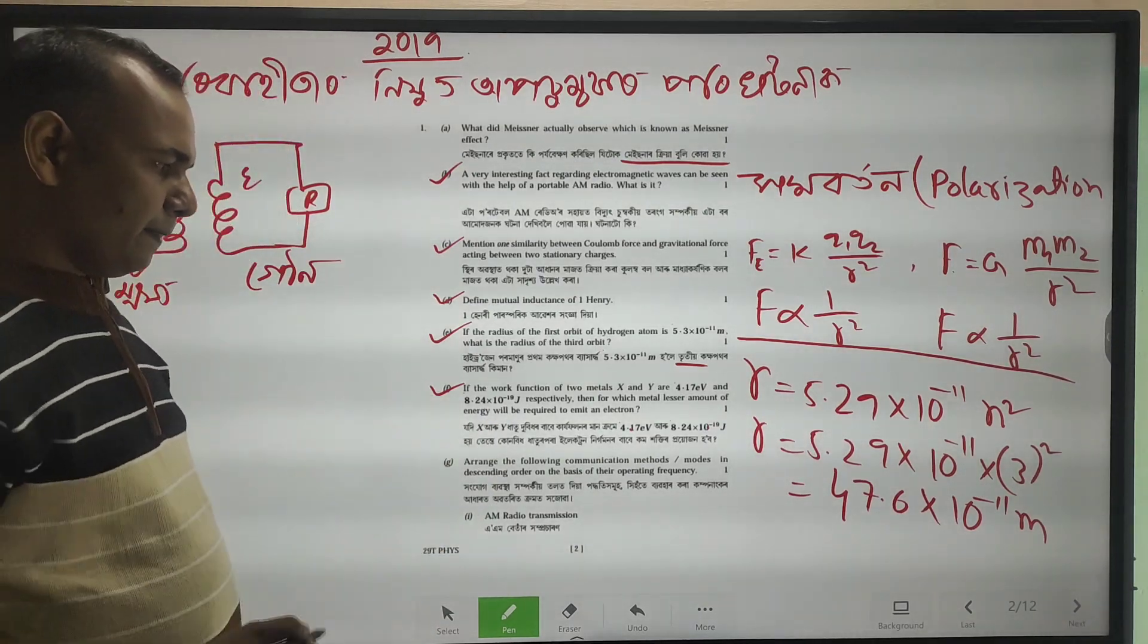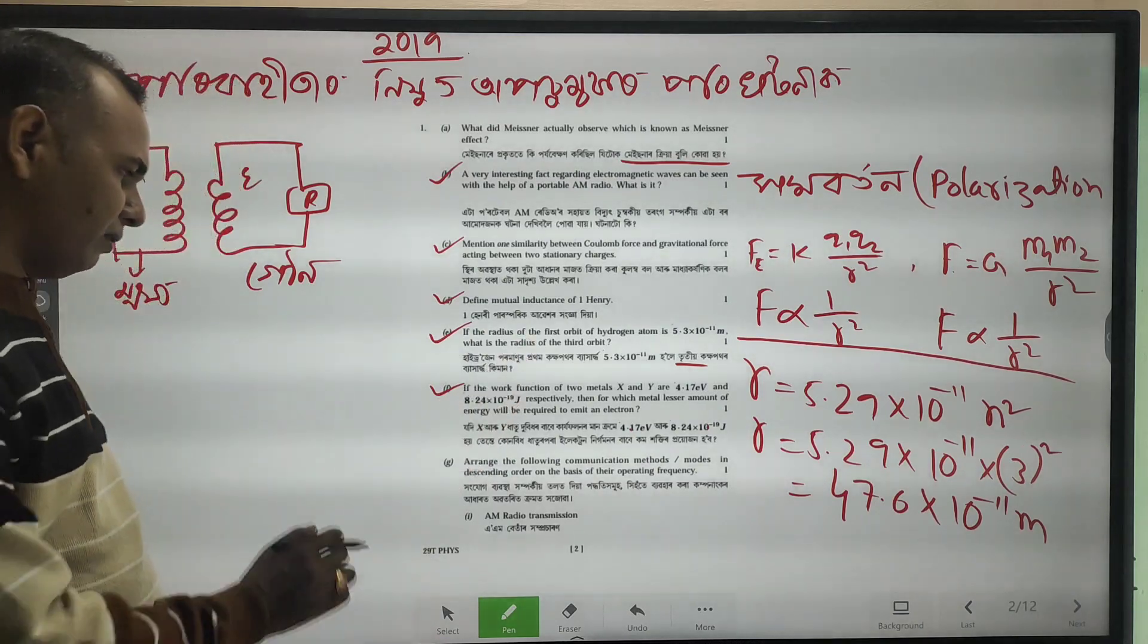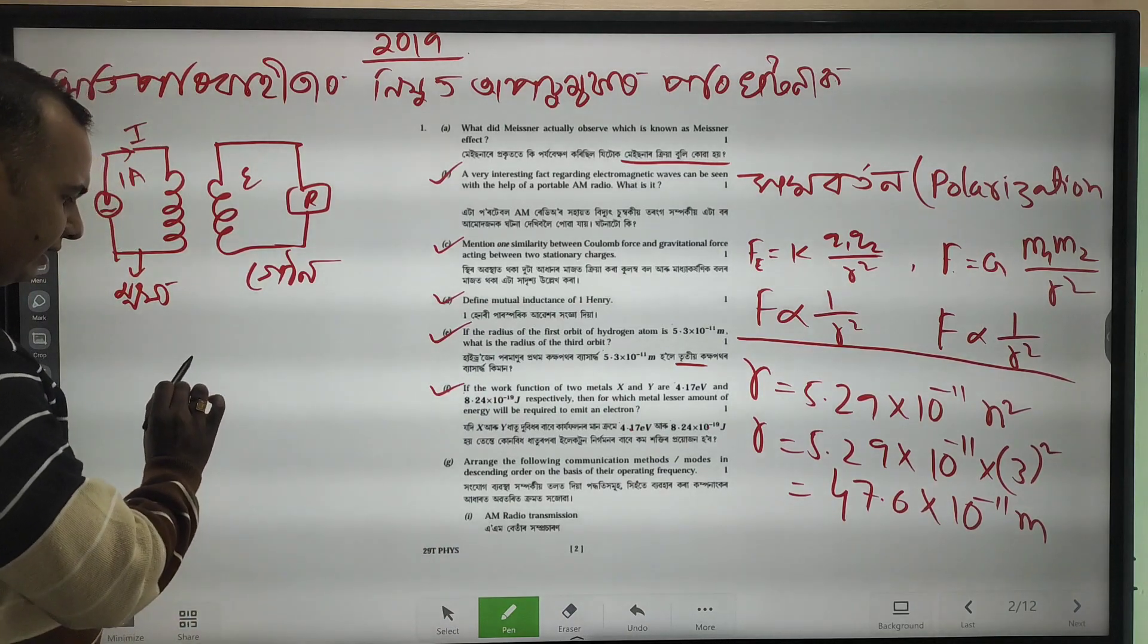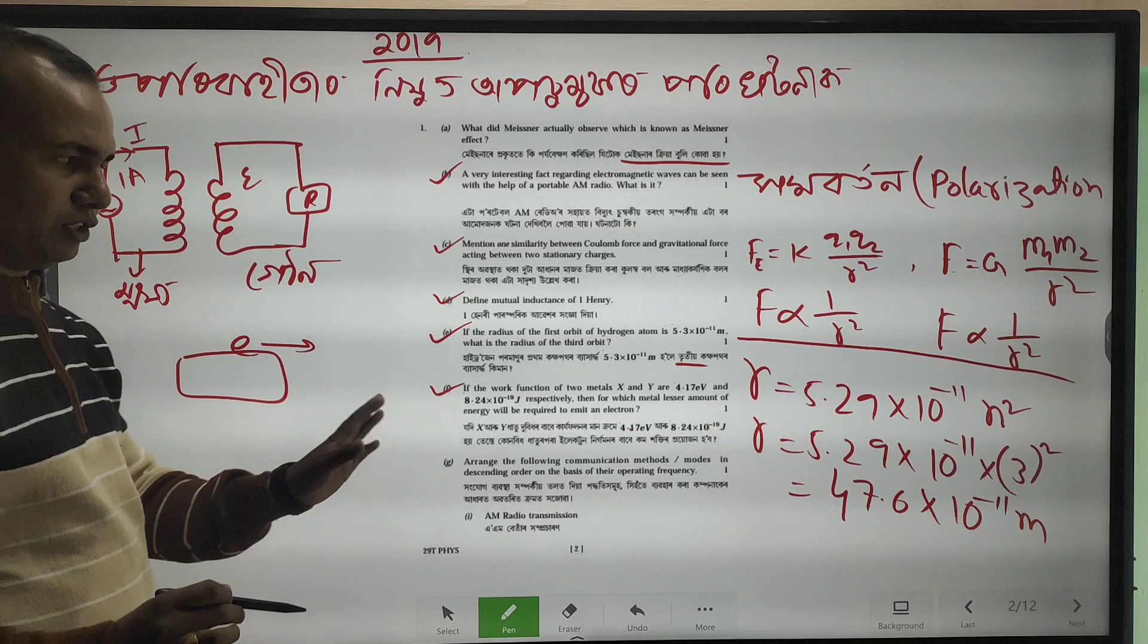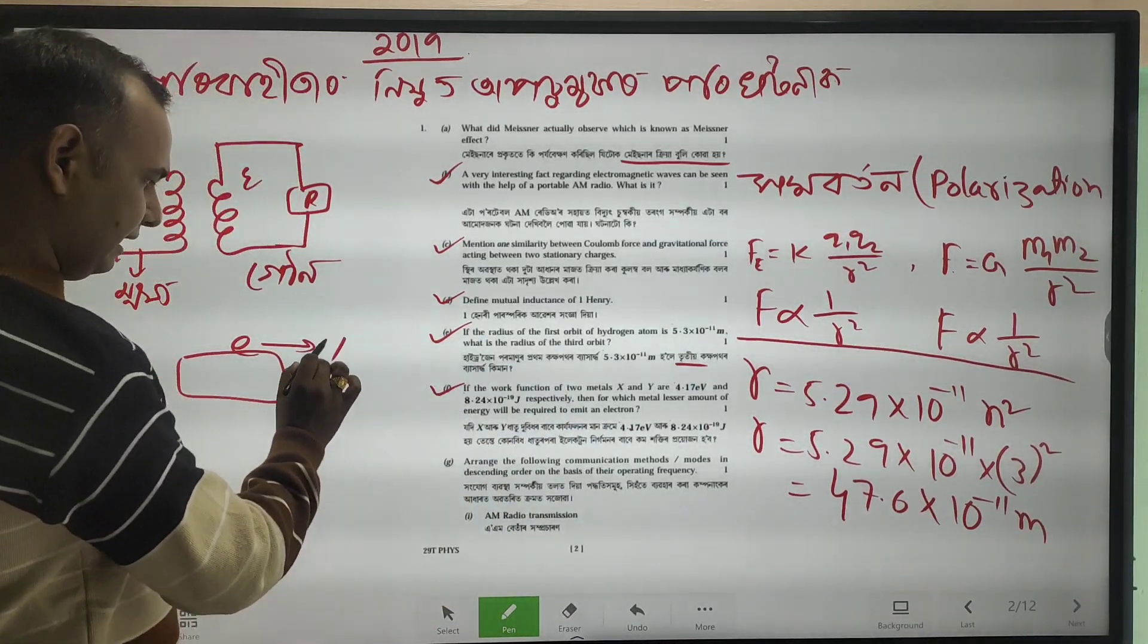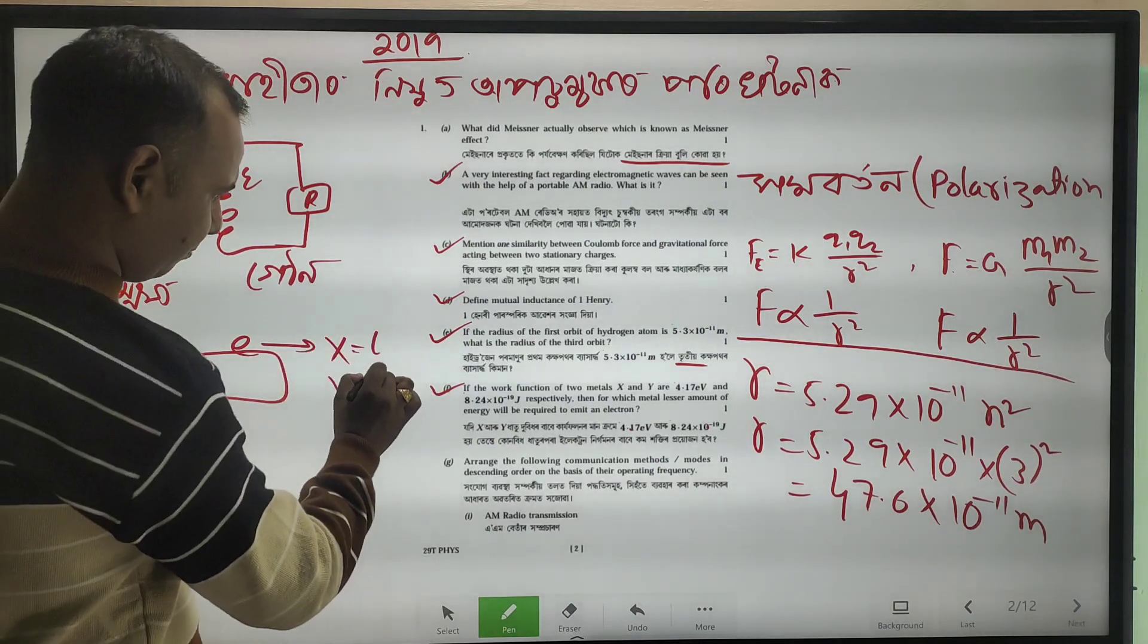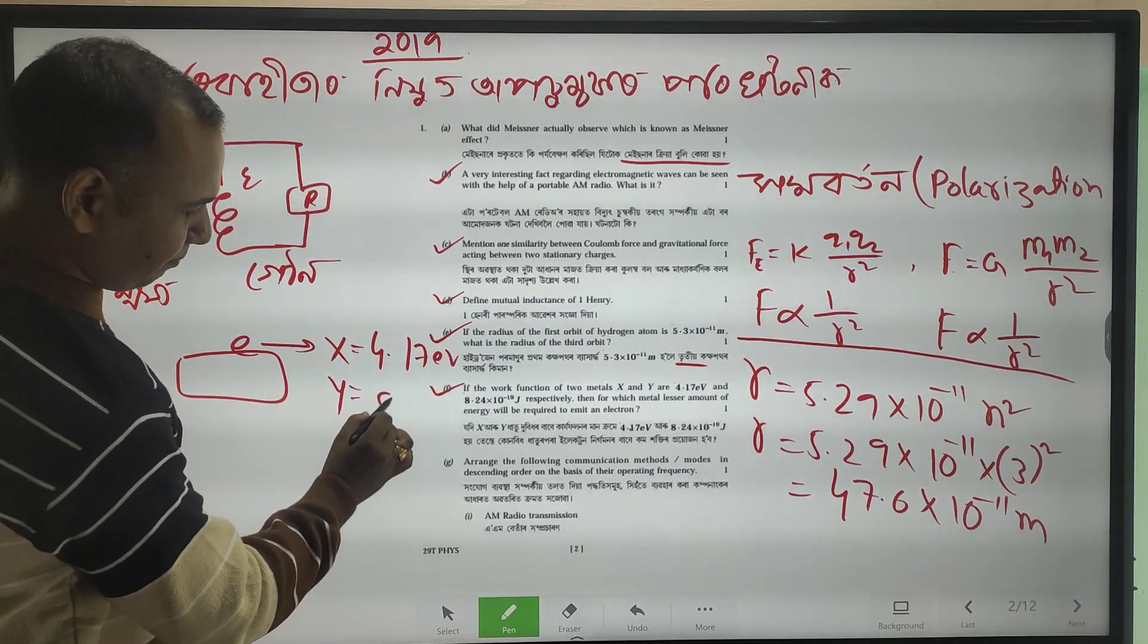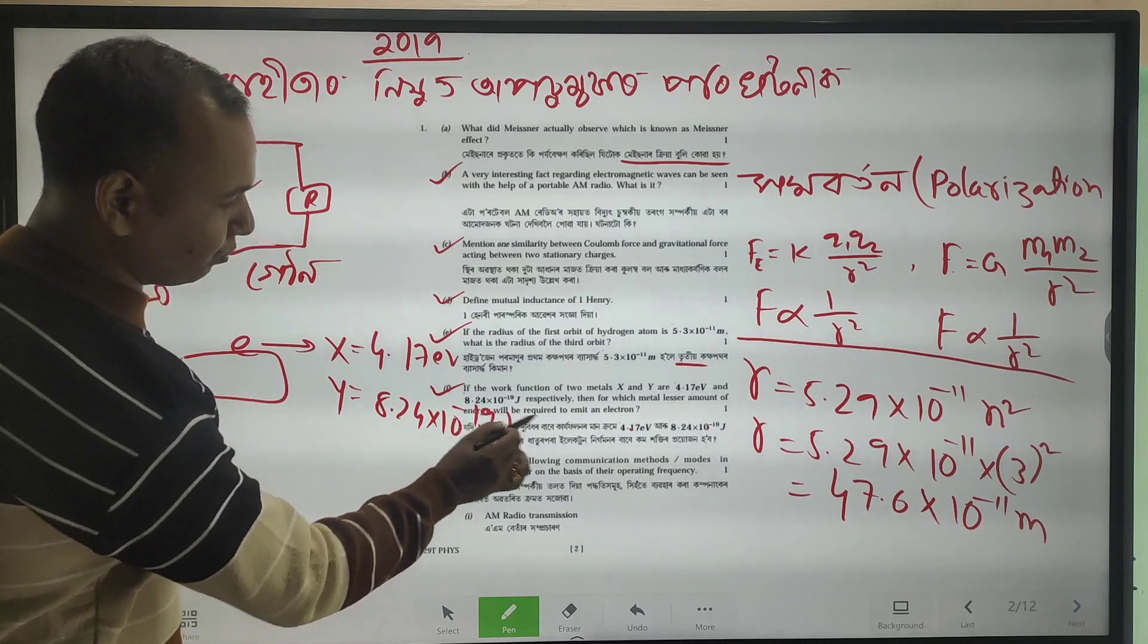The hydrogen pormonol pothom is 5.5 to the power minus 12, 18.24 into 10 to the power minus 19 joule.